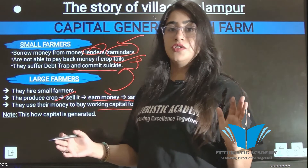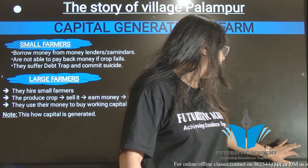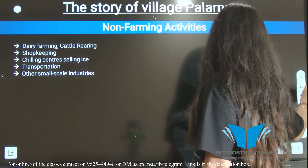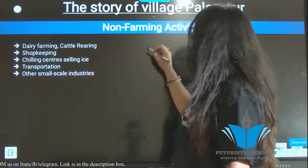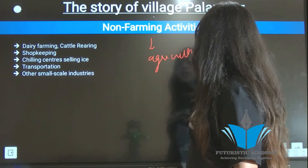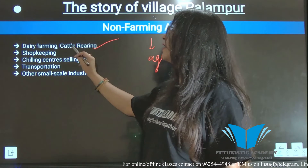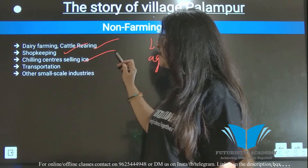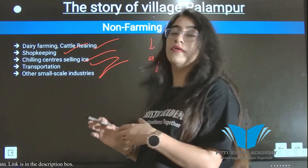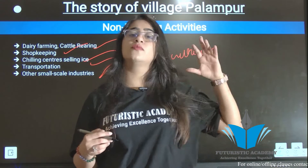The last topic is non-farming activities. These are activities in Palampur that are not related to farming. They include dairy farming, cattle rearing, shopkeeping, chilling centers, selling ice, transportation, and small-scale industries. These non-farming activities are performed in Palampur and similarly in other villages across India.